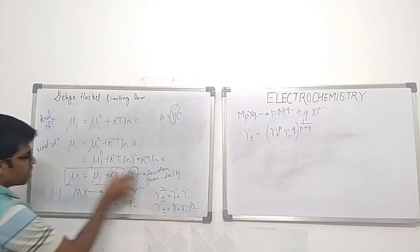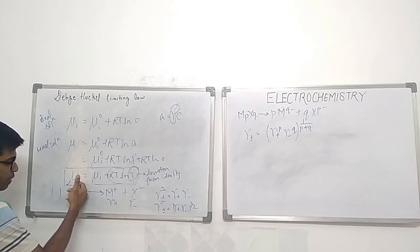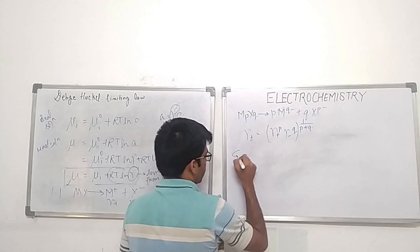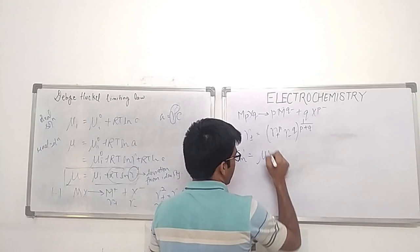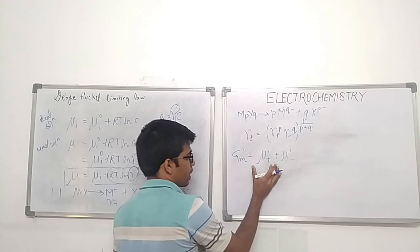If we want to find the change in energy, the chemical potential can be related to Gibbs free energy. G_m for ideal solutions equals μ₊ ideal plus μ₋ ideal — that is, the chemical potential of the cation and the chemical potential of the anion.